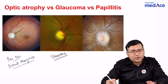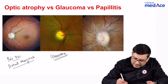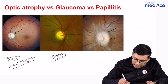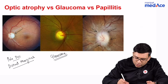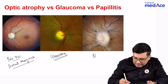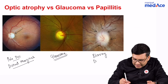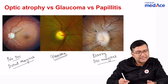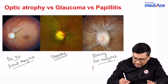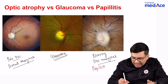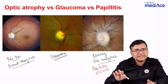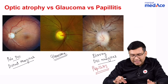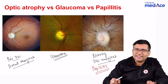The third picture what you can see here is there is pallor as well as blurring of disc margins. And whenever you see the blurring of disc margins, that means there is disc edema and that is called papillitis. So always differentiate between these three important optic nerve head disorders.